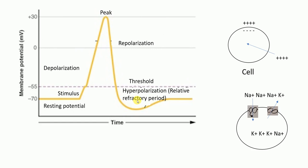This part of the graph is called the absolute refractory period. During this period, no other action potential is possible, no matter what kind of stimulus is applied or how strong the stimulus is. That is why it is called the absolute refractory period.